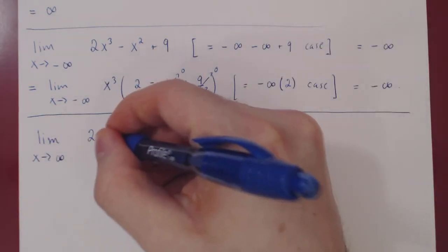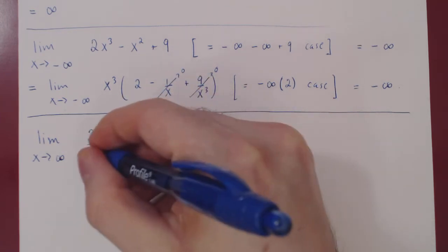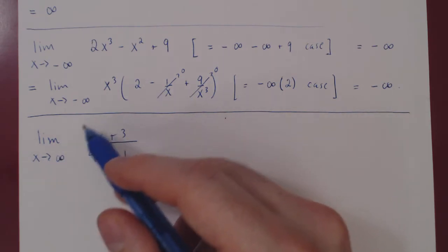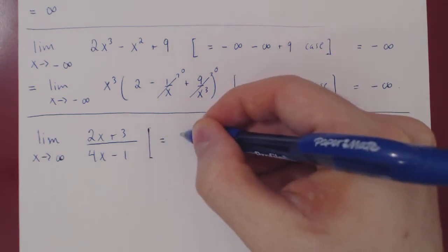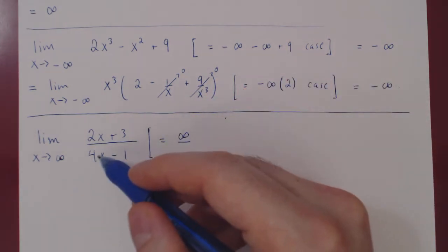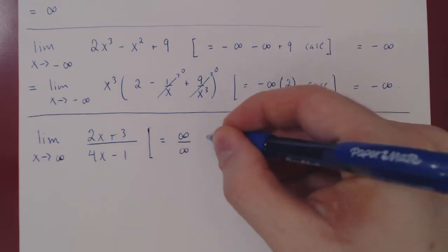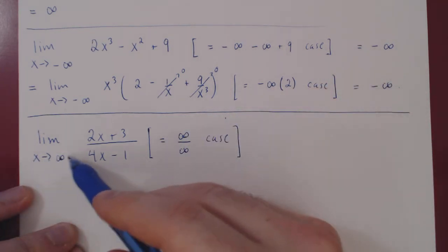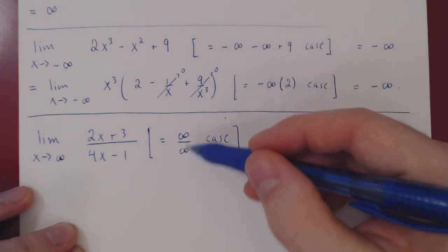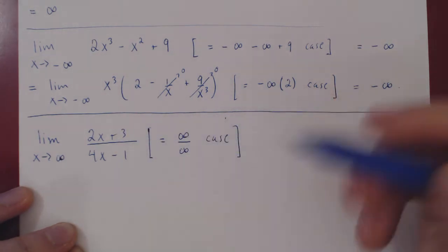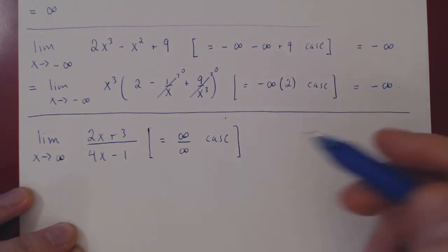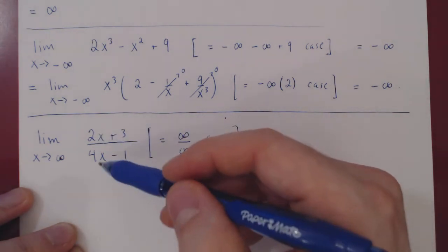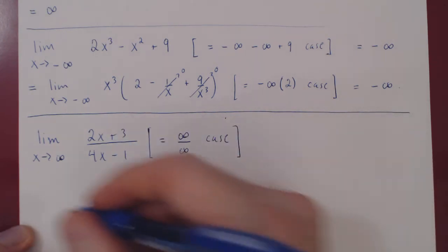Let's assume you have 2x plus 3 over 4x minus 1. As x goes to positive infinity, 2 times x will go to positive infinity, plus 3 gives us infinity, over 4x also goes to infinity, minus 1 also going to infinity. So we have an infinity over infinity case. As x approaches positive infinity, both the numerator and denominator approach infinity — something big over something big. It's not clear what's going to happen. The idea is, once again, to pull out the greater power of x. It is the same on top and bottom: x to the 1.